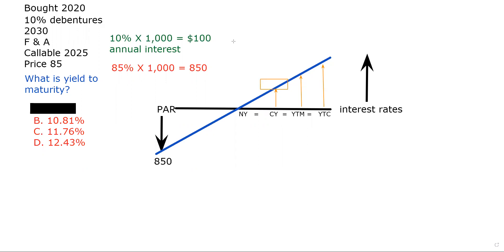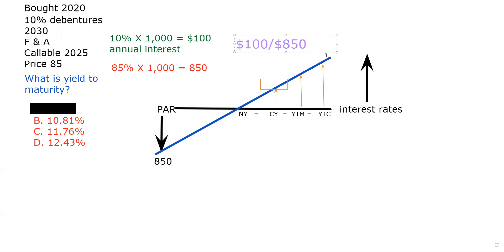Current yield is what an investment pays me divided by what it costs me. So I'm going to take the $100 and divide by $850. If you can't remember what to do on the test, you should divide. If you can't remember what to divide, take the first number divided by the second number — that takes care of almost all of the Series 7 math. What it pays me divided by what it costs me gives me current yield.